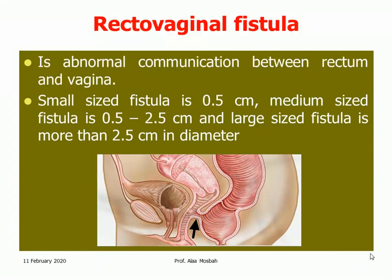Regarding recto-vaginal fistula, it is an abnormal communication between the rectum and vagina. According to size, it can be classified into small (0.5 cm), medium (0.5 up to 2.5 cm in diameter), and large (more than 2.5 cm in diameter).